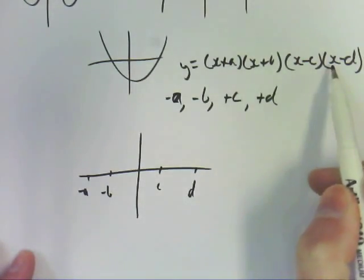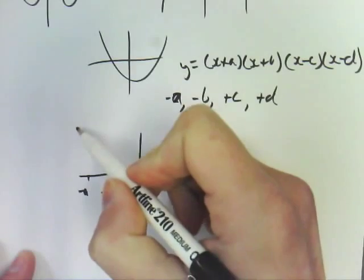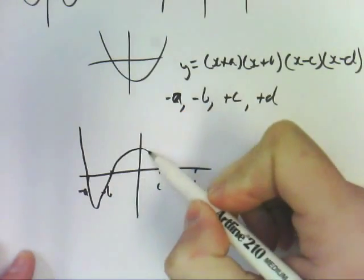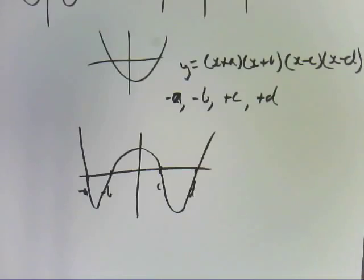It's a positive because all my x's are positive, so it's going to come down through a, through b, back down through c, and back up through d. So it'll look something like that.